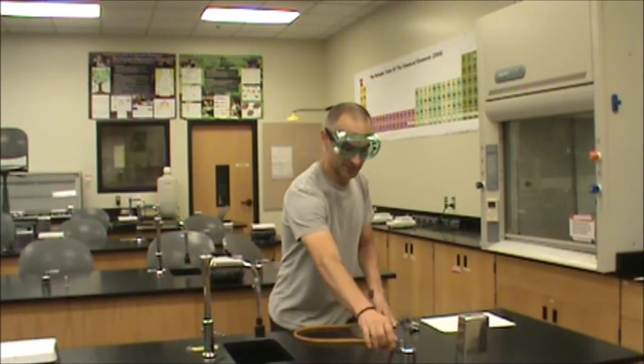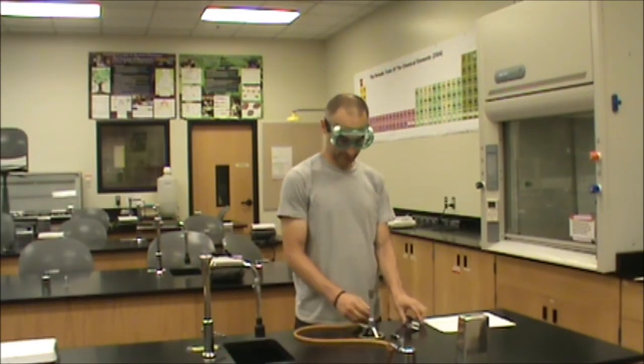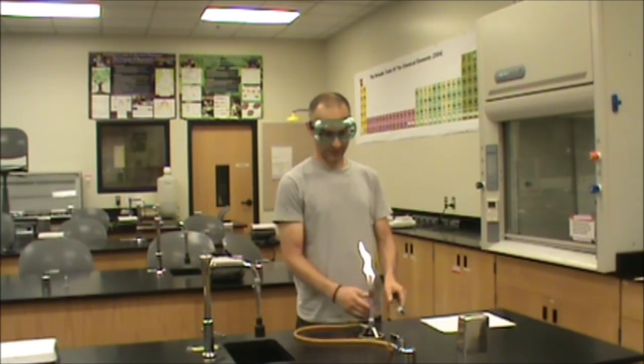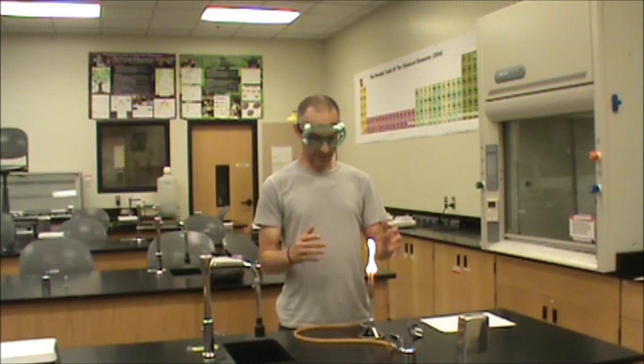An alarming situation that you might encounter is if you ignite the Bunsen burner and the air supply has been turned off. If we turn on the gas and ignite the Bunsen burner, we see that we have this very large, bright orange flame.